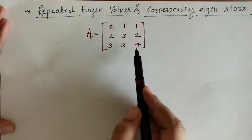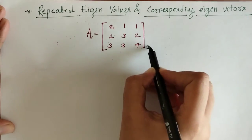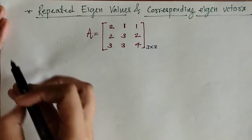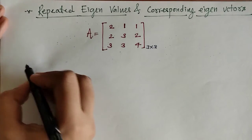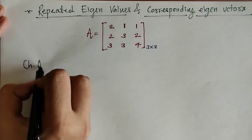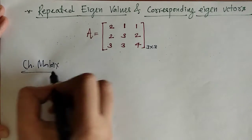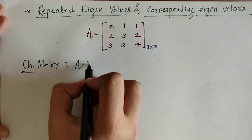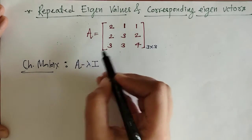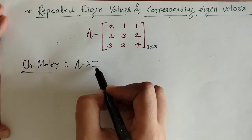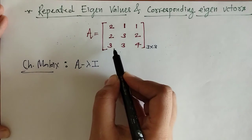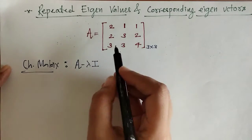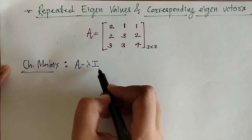Here we have a matrix of order 3. For finding eigenvalues, first we will find the characteristic matrix, which is given by A minus lambda I, where A is the given matrix, I is the identity matrix of the same order, and lambda is the scalar.